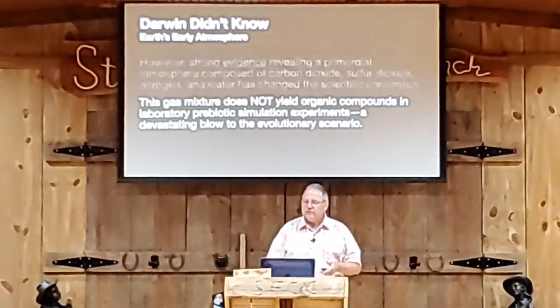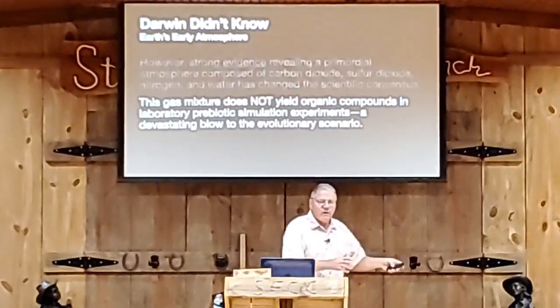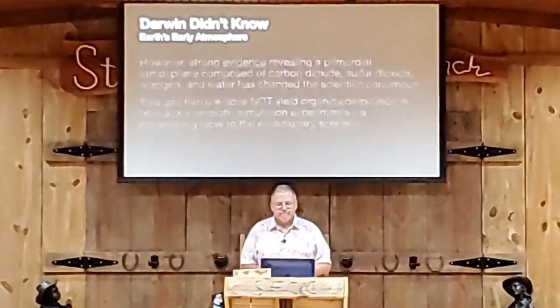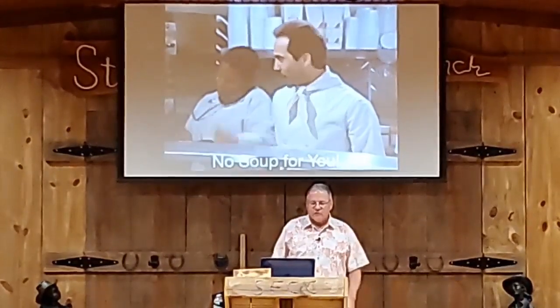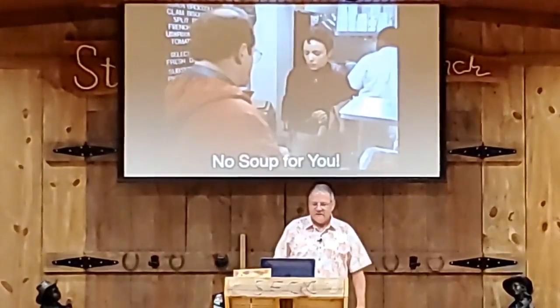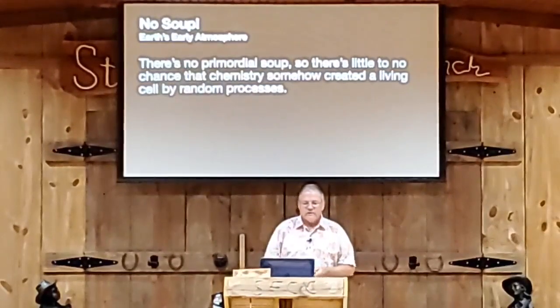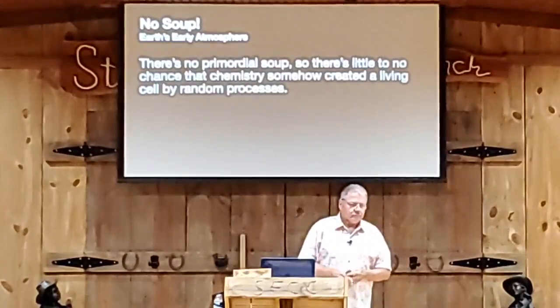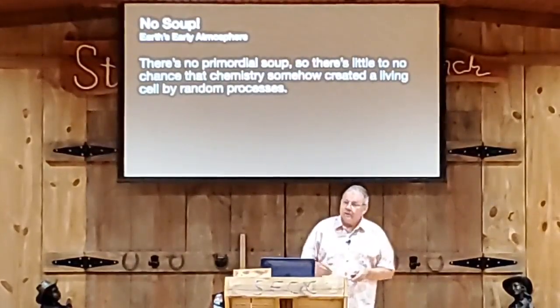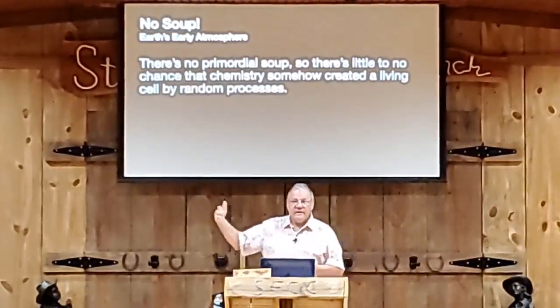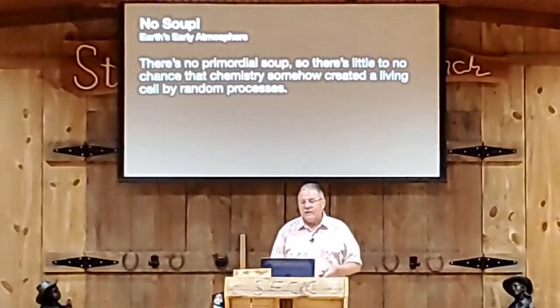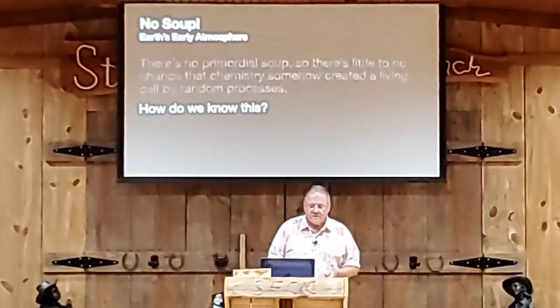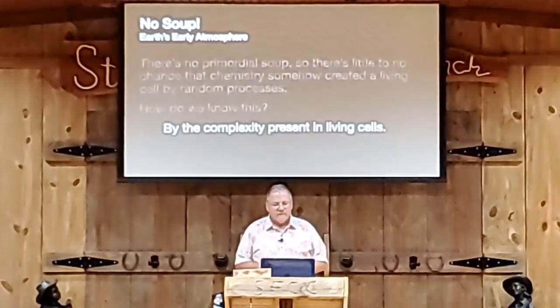The gas mixture does not yield organic compounds in a laboratory prebiotic simulation experiment — and this has been a devastating blow to the evolutionary scenario. There are now many evolutionists looking for a better alternative than Darwin to describe how evolution took place. In reality, there is no primordial soup. There is little to no chance that chemistry somehow created a living cell by random processes. But the difficulty is — we're here. It happened somehow. And those who refuse to put a creator in the scene are stuck trying to figure out how it happened — yet it's against all odds, virtually impossible.